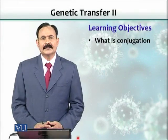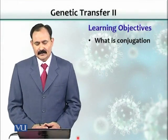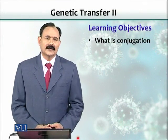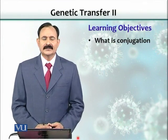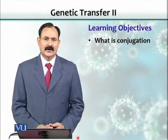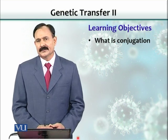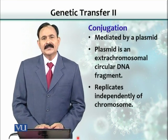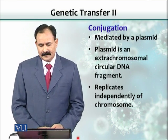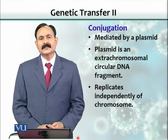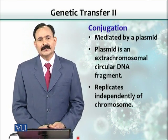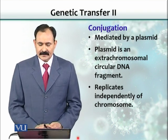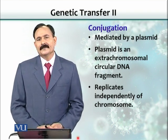Learning objectives include: what is conjugation? Conjugation is another lateral gene transfer from one organism to the other. It is mediated by a plasmid. A plasmid is an extra-chromosomal circular DNA fragment which can replicate independently of chromosomes.